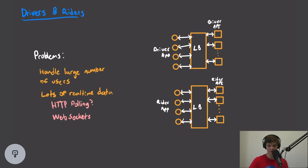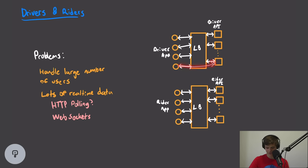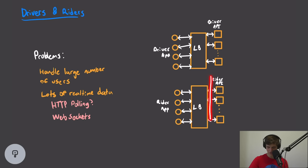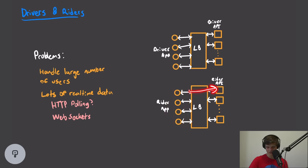The next thing to consider is that there's a lot of real-time data. The driver needs to update their location, and the rider needs to receive updates about that location change in real time. One option would be HTTP polling — the rider could go out to our API every two seconds. However, this introduces latency on the rider's side, and more importantly, it introduces a huge amount of load on our rider API, because every single user has to poll this API every two seconds.